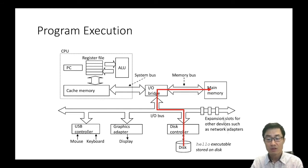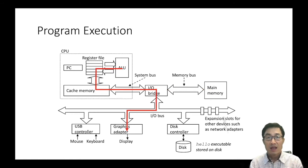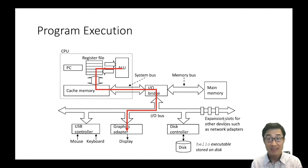From there, it moves to the cache memory and registers, and is finally decoded and executed by the ALU engine. As the CPU executes the printf statement, the Hello World text moves from CPU to the display via the system and IO buses.